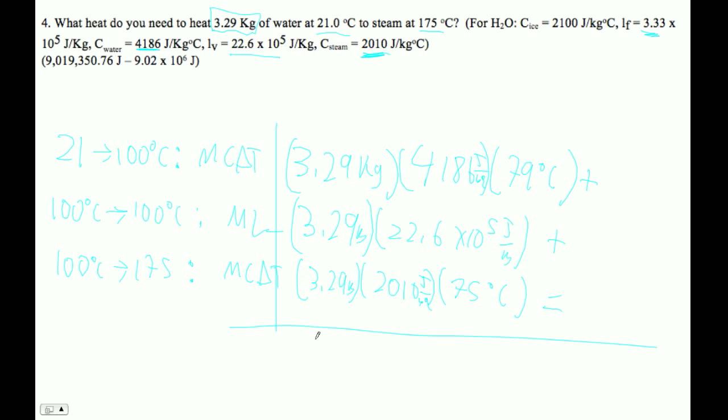And indeed, the number I'm getting on my calculator is 9019350.76, which is, of course, I give the unrounded answer there. And then we only have 3 sig figs. So let's see, 1, 2, 3, 4, 5, 6. So we'd have to say 9.02 times 10 to the 6th joules. Yay. That's part of a smile. It's like, yay.